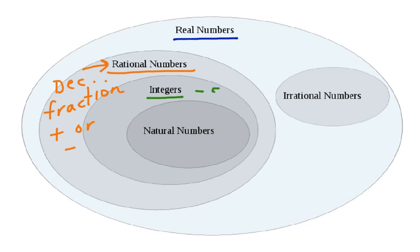Integers are going to be whole numbers that are either positive or negative. So when we have negative 5, positive 6, negative 12, those are integers. Notice that there aren't any decimals or fractions in the integer circle — those fall under rational numbers.